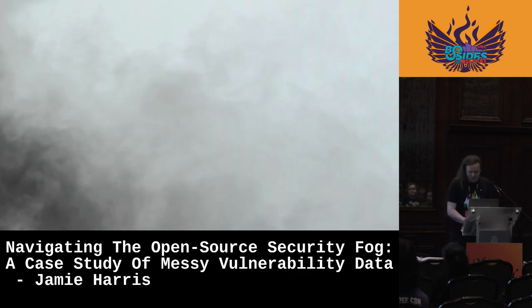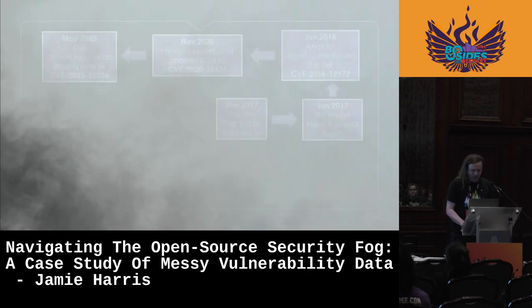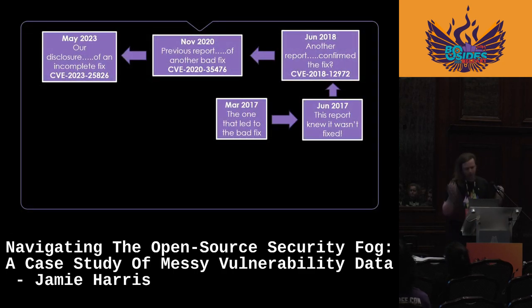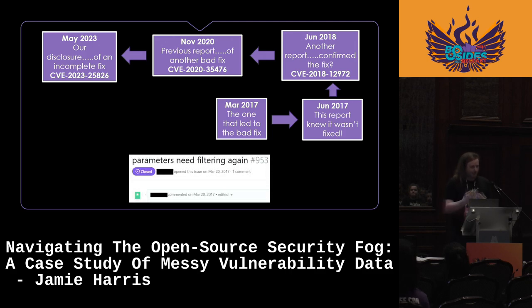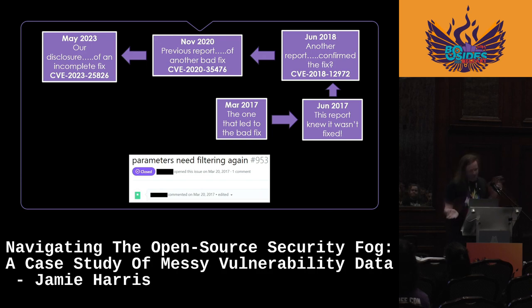There's more fog — we've got to go backwards further. There's still more to this issue. We've landed in March 2017: an earlier disclosure in the same year that led to a fix that was known bad, but later misreported as good in 2018, and then confirmed exploitable in 2020 before being bypassed again.